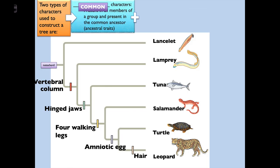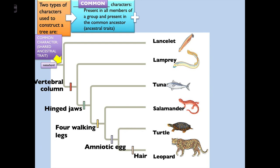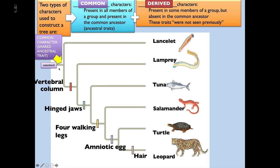Two types of characters are used to construct a phylogenetic tree. First are common characters — present in all members of a group and in the common ancestor. Looking at lancelet, lamprey, tuna, salamander, turtle, and leopard, you notice they all have a notochord — something running down their back that carries nerve impulses from the brain to the rest of the body. As we go further, we see derived characters — present in some members of the group but absent in the common ancestor. The lancelet was fine with just a notochord, but the lamprey, tuna, salamander, turtle, and leopard all developed a vertebral column.